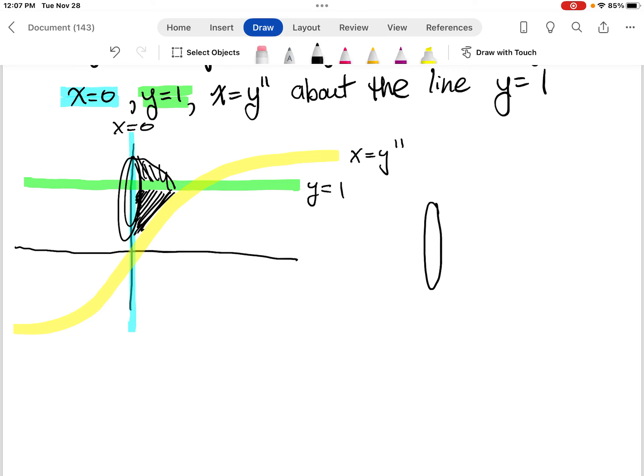So if we look at it without all the mass, it might look something like this. And then it spins around this way, and this is where the line y equals 1 is at.